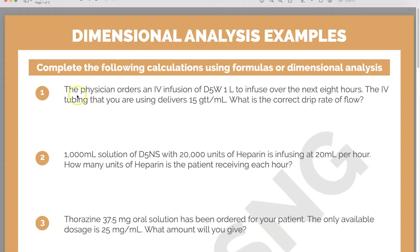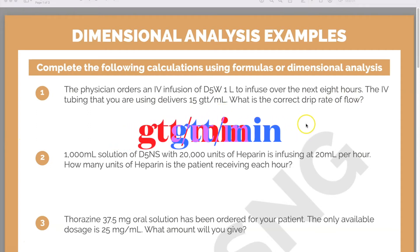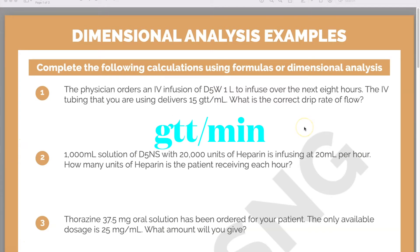The first question: the physician orders an IV infusion of D5W — one liter to infuse over the next eight hours. This is dextrose 5% in water to infuse over the next eight hours. The IV tubing delivers 15 drops per milliliter. What is the correct drip rate of flow? When a question asks you for a drip rate, the answer is in drops per minute. Feel free to pause, try to work through the question, and then come back for the answer.